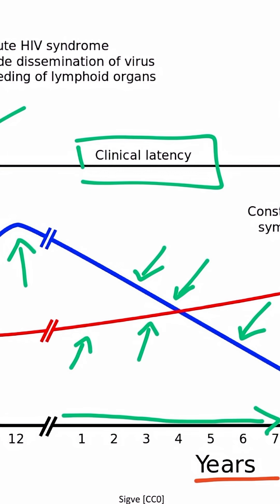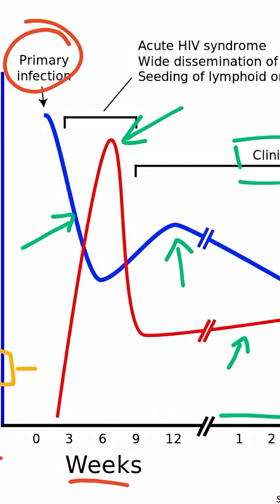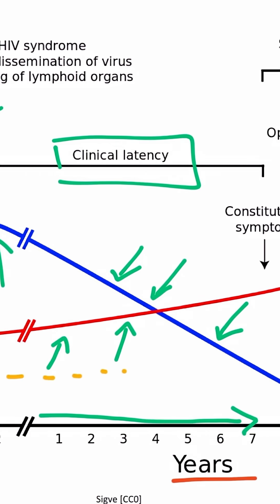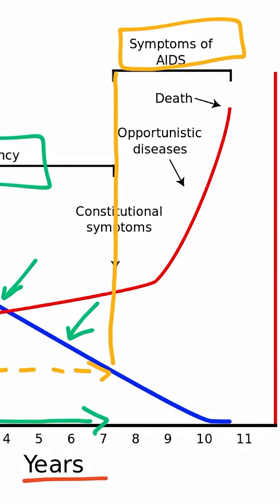Once the CD4 count drops to 200, the disease is called AIDS, and the patient begins to develop symptoms. A CD4 count of 200 corresponds to this blue line right here, and it's here that the patient has symptoms of AIDS. Because the viral load is so high and the immune system is so suppressed, the patient begins to develop opportunistic infections and eventually dies.